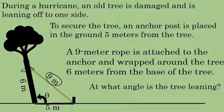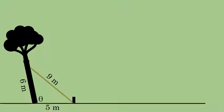Let's do it. Now in this situation, we can represent the leaning tree and the rope attaching it to the ground as a triangle. And in this triangle we know the lengths of all three sides, and when you know the lengths of all three sides of a triangle you can find the measure of any angle using the Law of Cosines.